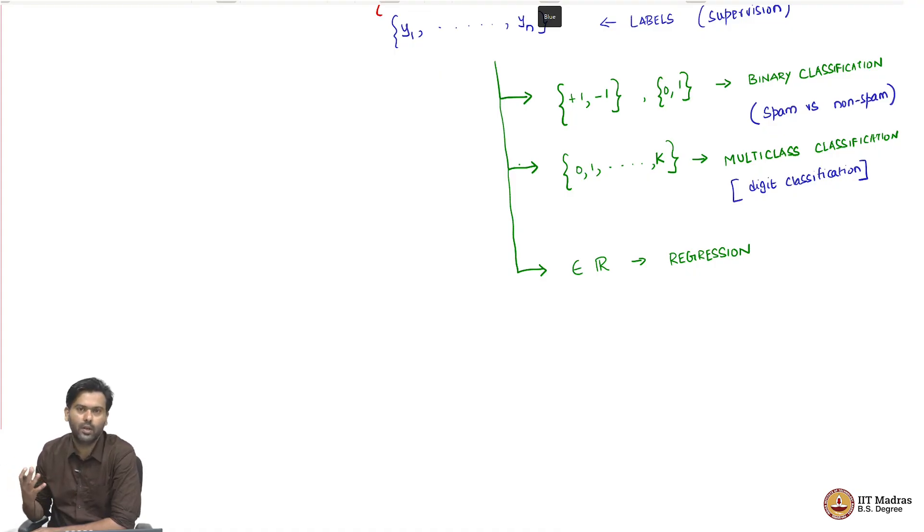Now, this amount of rainfall is a real number. It can take any value. So, 100.23 centimeters, for example. It can take any real number. So, we are going to call this a regression problem. Example, rainfall prediction.